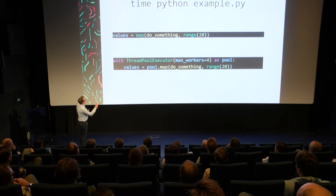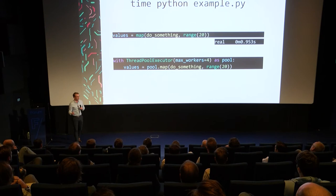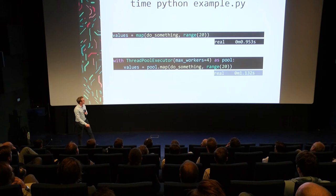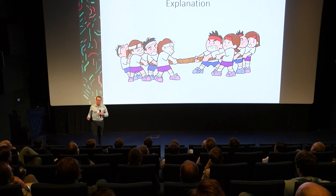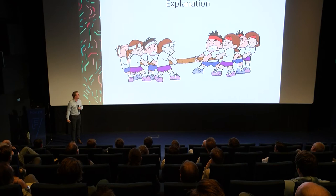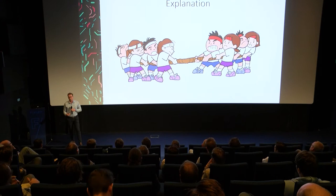Now let's compare the speed. The first version calls do_something sequentially, and it takes about one second. With a thread pool using four threads, you'd theoretically expect a four times speedup — but we actually see a slowdown. What's going on is that all four threads are fighting for access to the GIL. You need to hold the GIL to execute a bytecode, so only one thread can execute a bytecode at any one time. Because of the overhead of thread creation and the threads fighting each other for the GIL, you see a performance decrease instead of an increase.